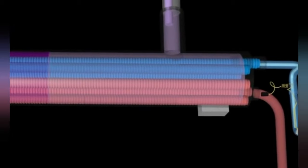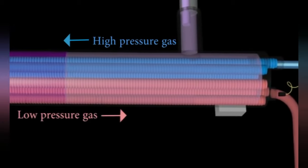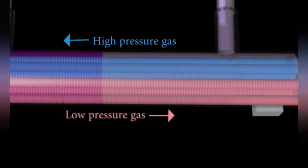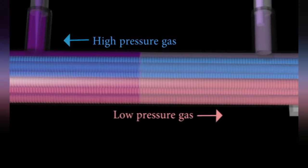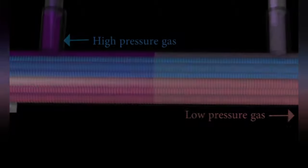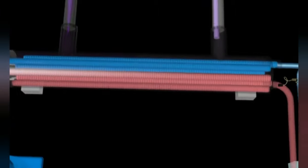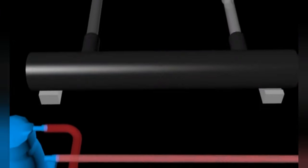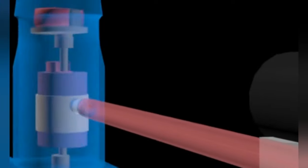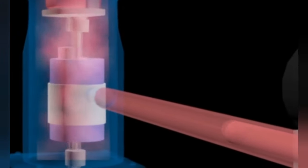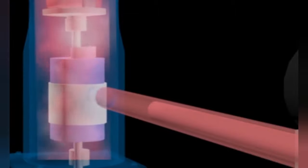The most commonly used evaporator is the shell and tube type, where the refrigerant flows in the tube and water floods the shell. The evaporator is insulated to reduce heat transfer. The refrigerant in low pressure gas then returns to the compressor to continue the next cycle.